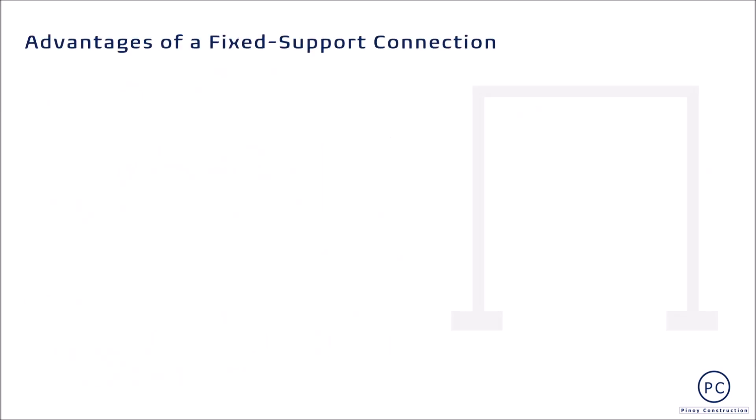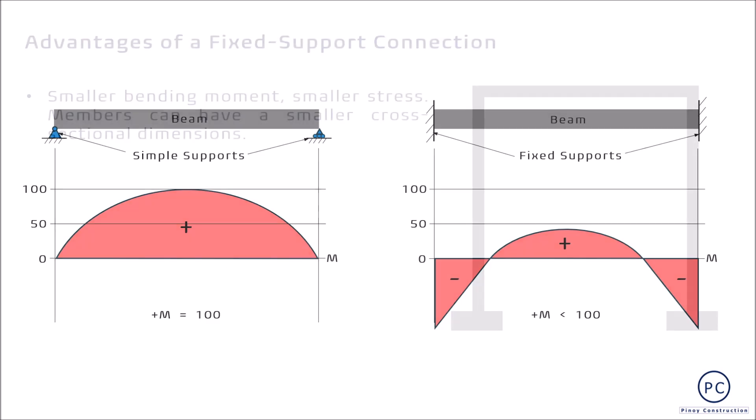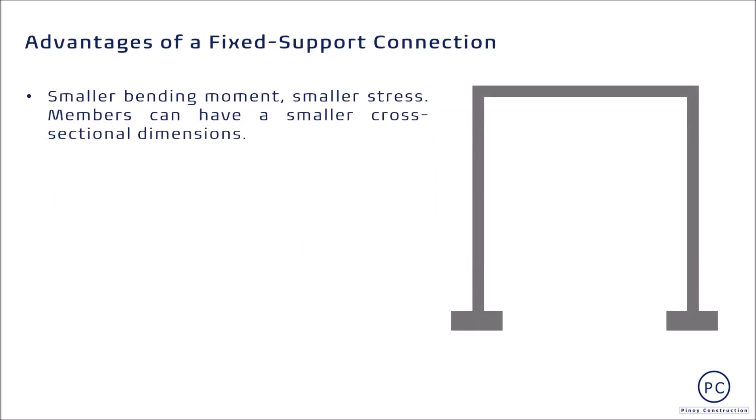May mga significant advantages ang paggamit ng fixed supports sa frame. Una, ang maximum bending moment generated from gravity loads ay mas mababa kaysa sa frame na simply supported. Ang advantage ay maaaring maidesign ng elements sa mas maliit na cross-sectional dimension, mas maliit na size, mas budget-friendly. Another advantage ay ang pagkakaroon ng increased resistance to deformation. As discussed earlier, ito ay dahil sa rigidity or stiffness.